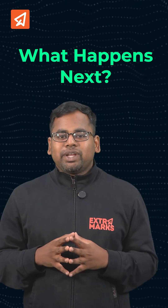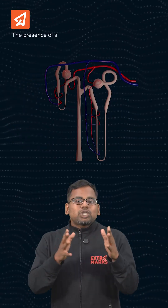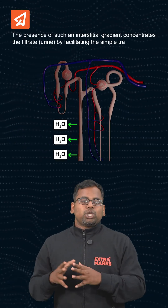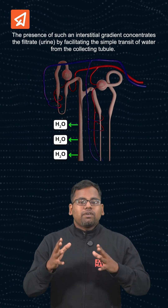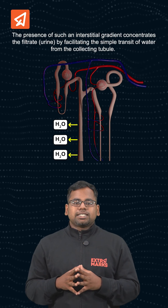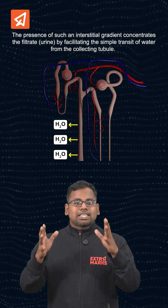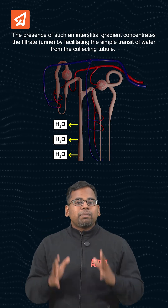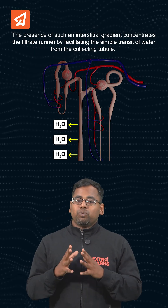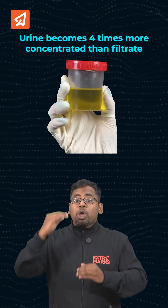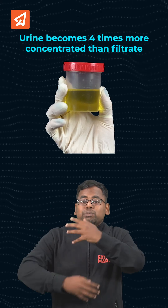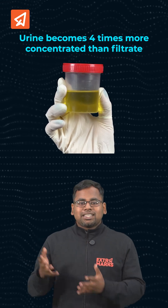These salt gradients pull water out of the collecting duct. That's how our body saves water and makes the urine up to four times more concentrated than the filtrate.